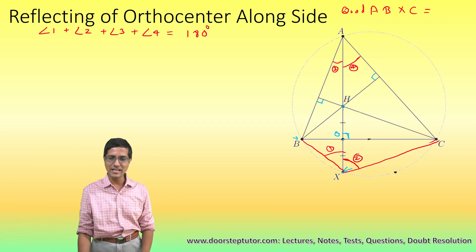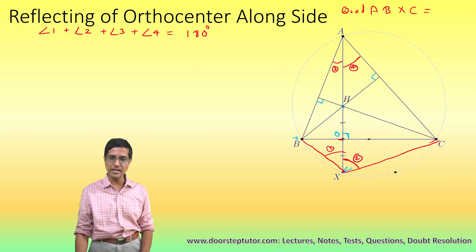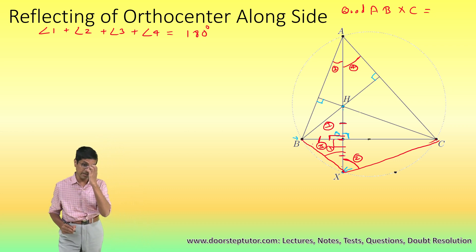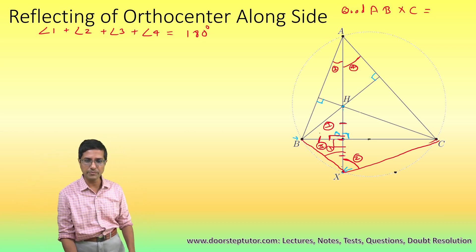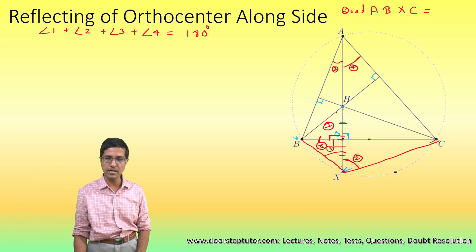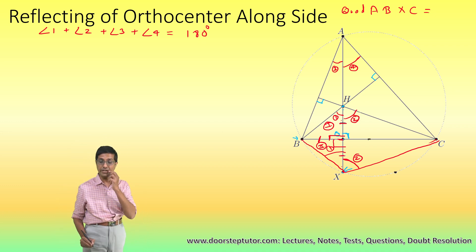The first thing we do is recognize that by the very nature of point X, OX equals OH. This side BO is common, and the angle is 90 degrees in both triangles 1 and 2, which means triangles 1 and 2 are actually congruent. Because they are congruent, if this angle is 1 then this angle is also equal to 1, and similarly this angle is equal to 2.